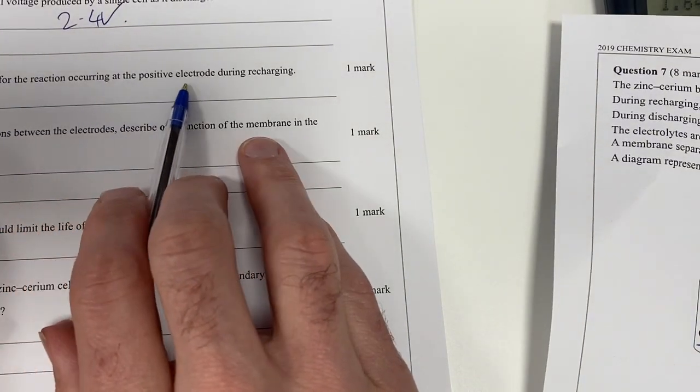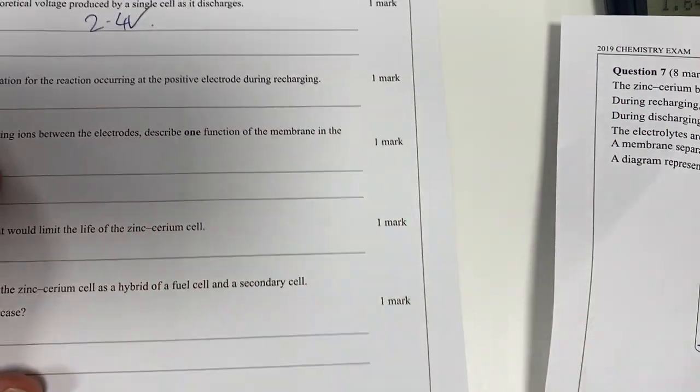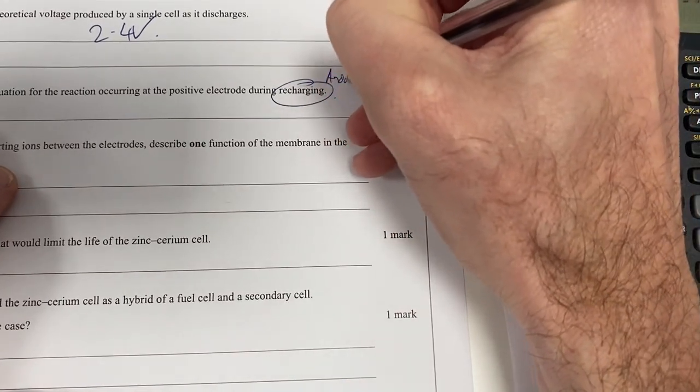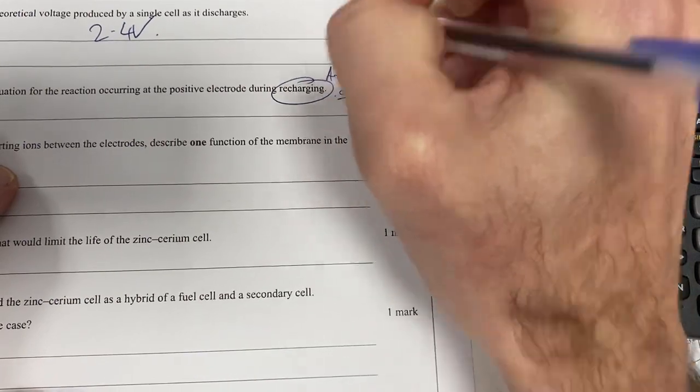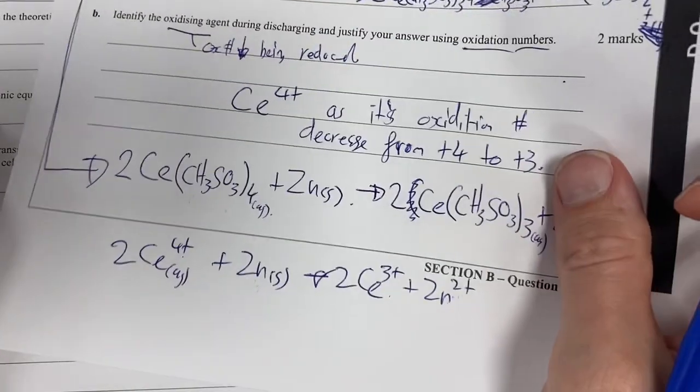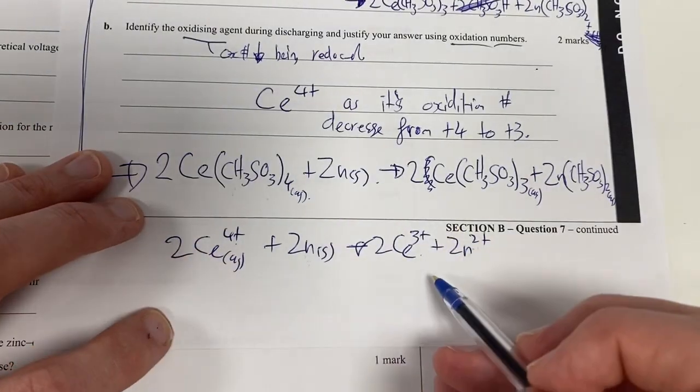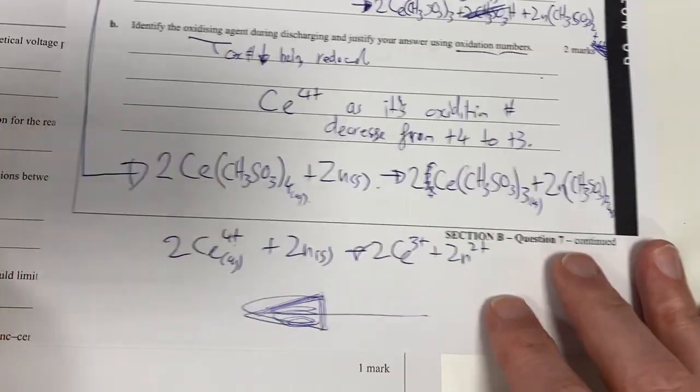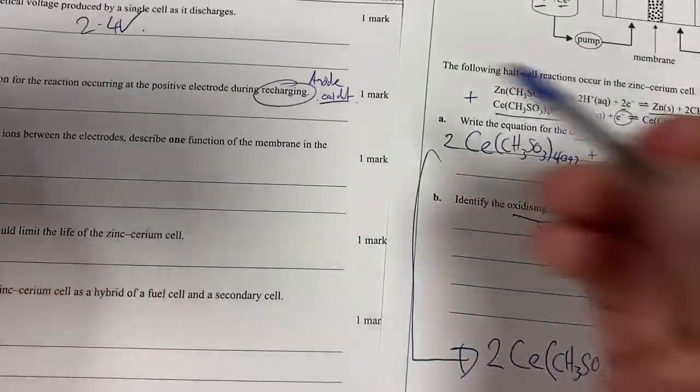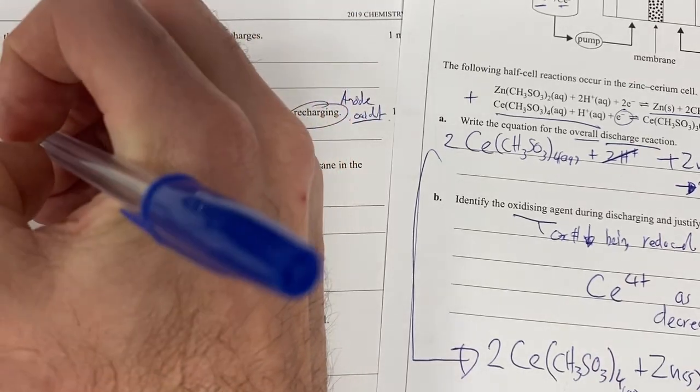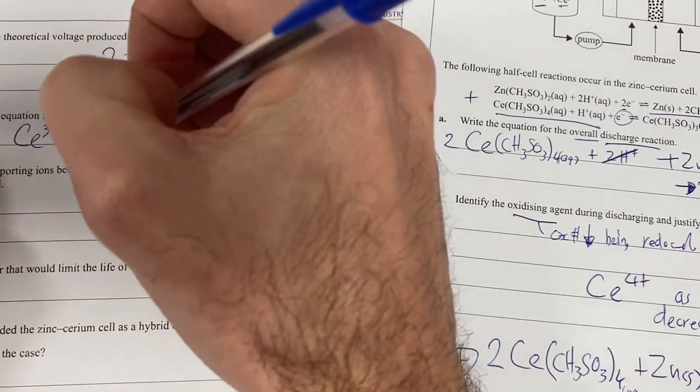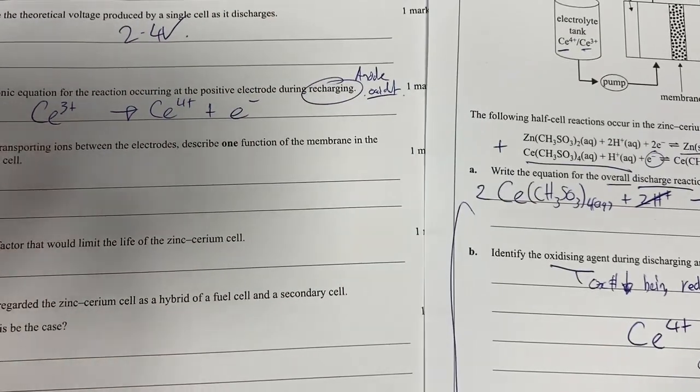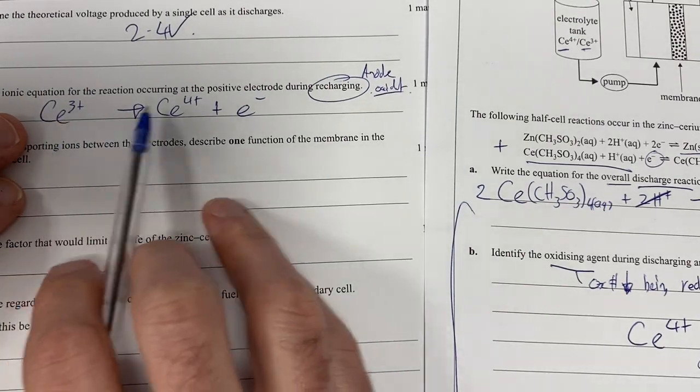The ionic equation for the reaction occurring at the positive electrode when it's recharging. All right, so positive electrode when recharging, this is electrolysis. That means it must be the anode. So therefore it's oxidation. And it's an ionic equation, so we're just going to be talking about the ions here. Now recharging, that's this stuff going backwards. So therefore we want the oxidation as it's going backwards. So it's going to be CE3+ and it's going to be forming CE4+. So therefore it's going to be losing that one electron.